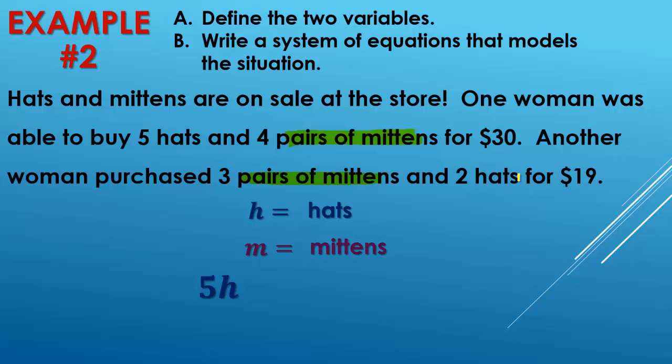So for our first one, the woman bought five hats, so it would be 5H and four pairs of mittens, so that would be plus 4M and that's equal to $30. Now for this next one, since we started off with H here, we want to start off with H in the next one. So here we have hats. So she bought two hats and three mittens, so 2H plus 3M and spent $19.